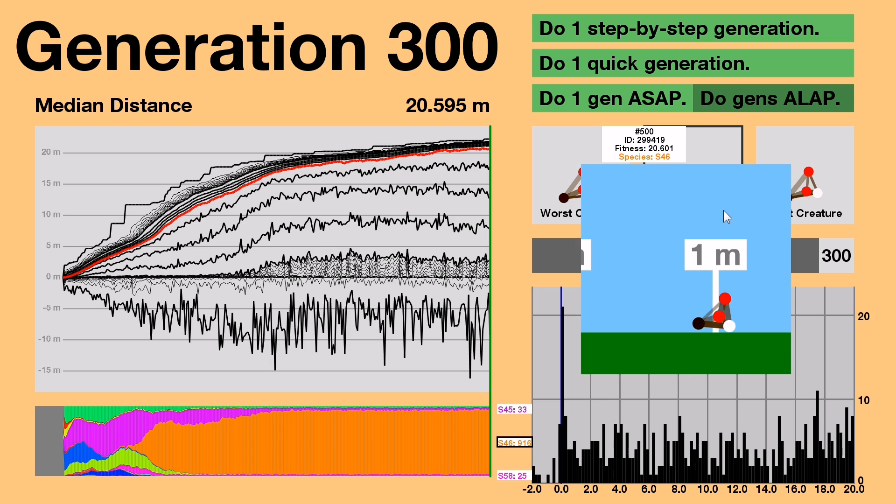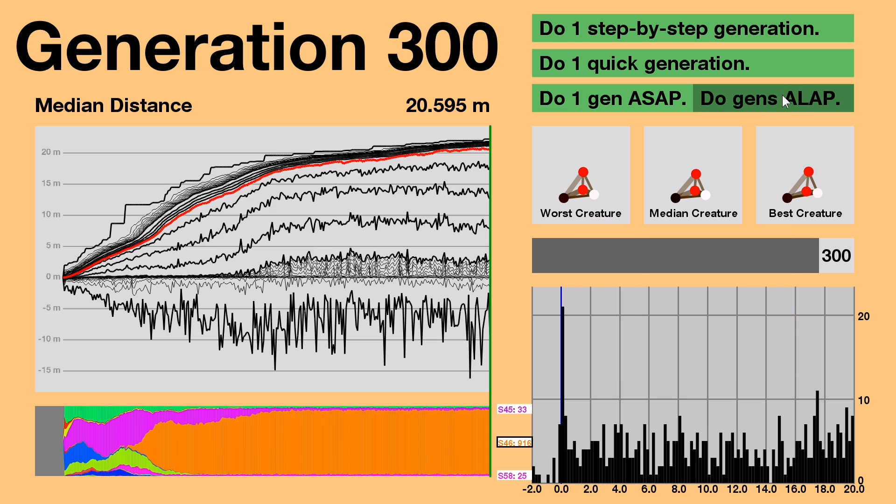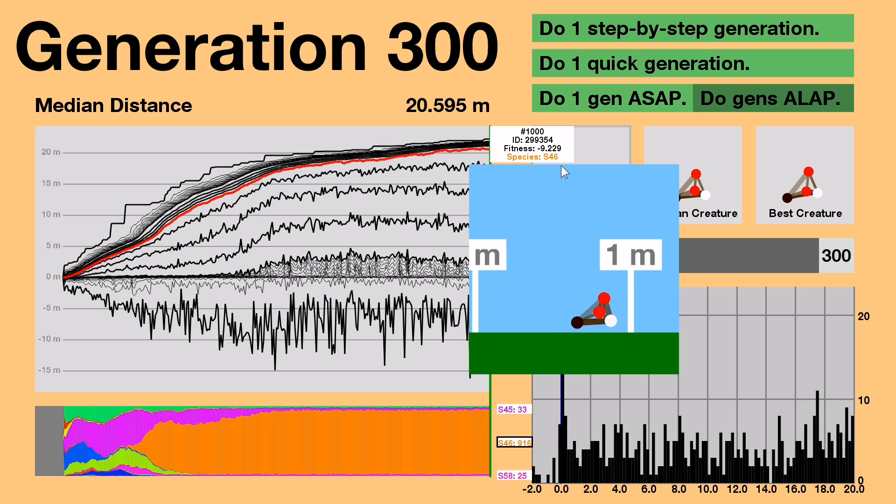As expected, the median creature and best creature are pretty much identical at this point, except for that little hiccup. And the worst creature. I mean, it looks the same, but somehow it must be different. Oh, I see why.